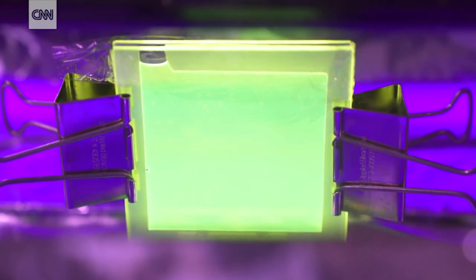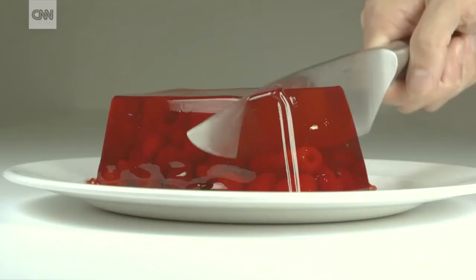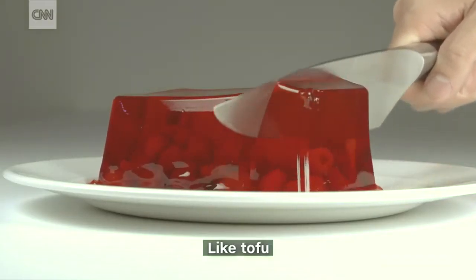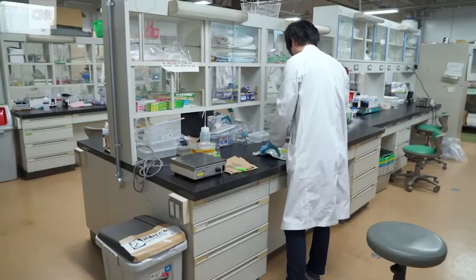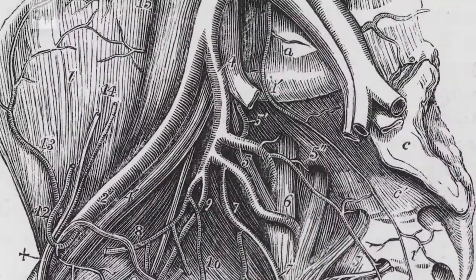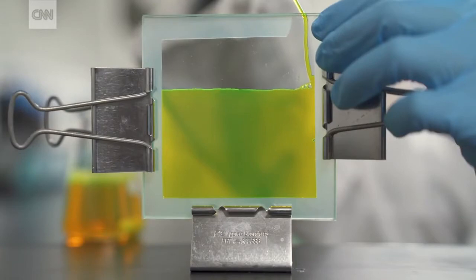Hydrogels are all around us. In soft contact lenses, disposable diapers, even food, like tofu or jelly. There are natural hydrogels in our tissues and organs, and synthetic ones, like the kind made here.